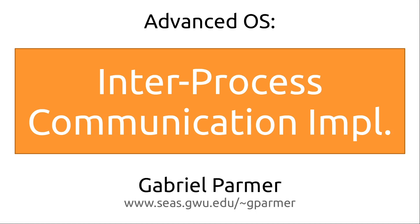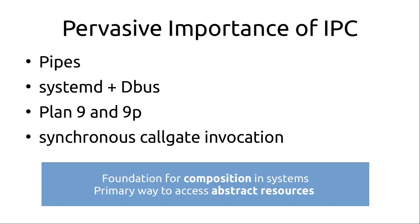Hello, operating systems people. This is Gabe, and today we are going to be talking about interprocess communication implementation — how we actually go about optimizing one of the most fundamental parts of our systems. We've seen over the past three weeks Unix with pipes, modern Unices with System D and D-Bus, Plan 9 where IPC using 9P is a fundamental structuring pattern, and capability-based operating systems with synchronous call gate invocations. IPC really is a foundation for composition within systems, allowing abstract resources to be defined at user level in servers that multiple clients can access.